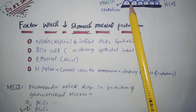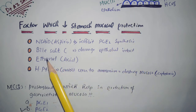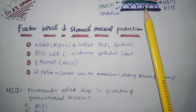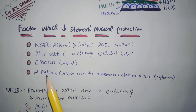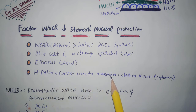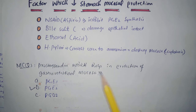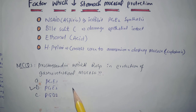The epithelial junctions can be damaged by bile salt. The third factor is ethanol, which is acidic and can directly damage the mucosa. The fourth is H. pylori, which has an enzyme called urease that converts urea into ammonium — ammonium is cytotoxic and destroys the mucosa. In summary, prostaglandin E2 helps protect the gastrointestinal mucosa by stimulating mucous secretion.